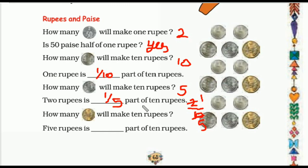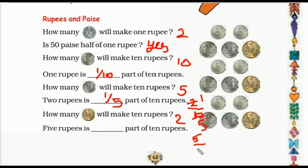Or you can also write two tenth part of ten rupees. Here the question is: how many five-rupee coins will make ten rupees? Two — two five-rupee coins will make ten rupees. Now five rupees is what part of ten rupees? So here five upon ten — five ones are five and five ones are ten — that means half part of ten rupees.